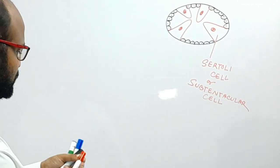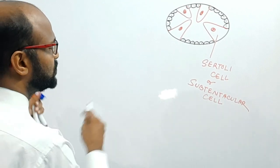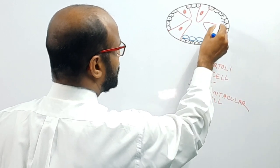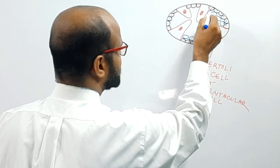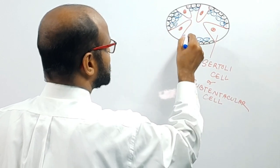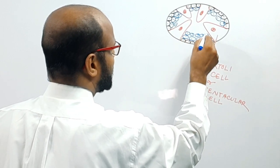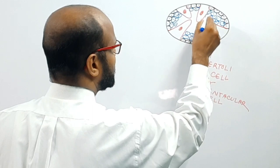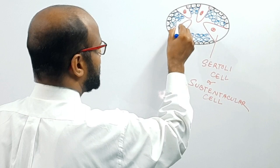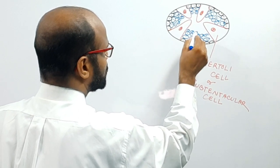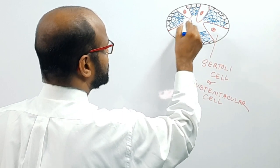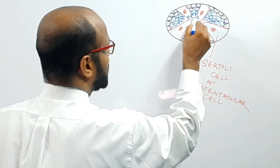By the division of germinal cells, spermatogonial cells are formed. The first layer contains spermatogonial cells, and then comes the primary spermatocyte layer. Division of the primary spermatocyte produces secondary spermatocytes, then spermatids, and eventually sperms are produced.